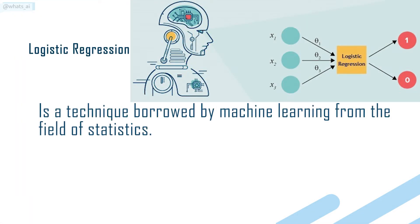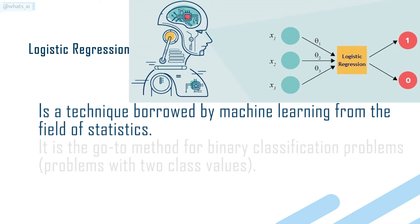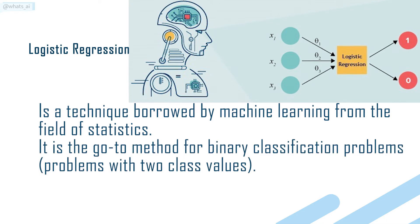Logistic regression is a technique borrowed by machine learning from the field of statistics. It is the go-to method for binary classification problems — problems with two class values.